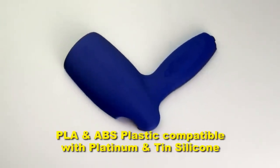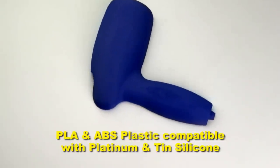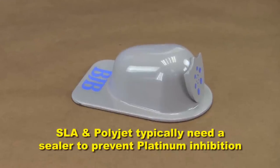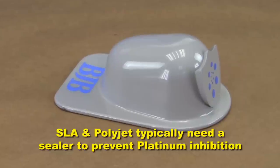FDM printed materials like PLA and ABS would be fine for casting many of the mold making silicones against. But as mentioned in our intro mold making video, SLA and polyjet patterns would need to be sealed to prevent curing issues with many platinum based silicones.